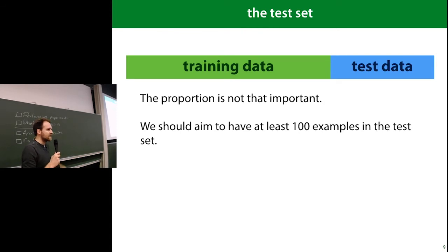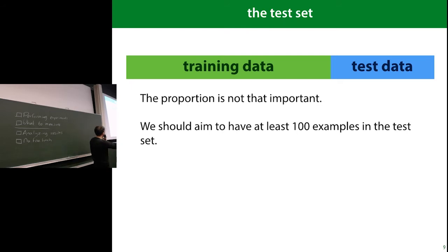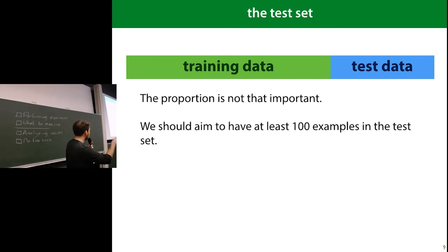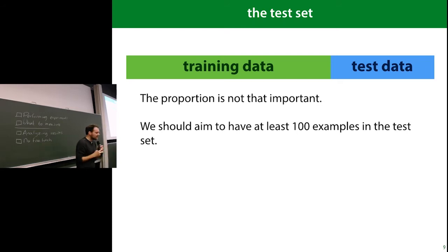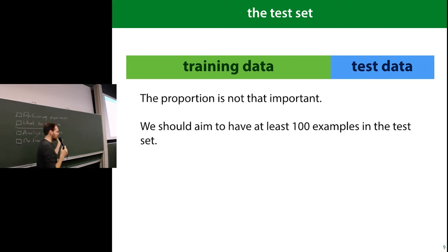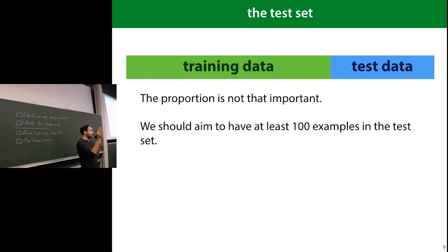Usually we don't actually go out and get new data once we've trained our model. What we actually do is withhold part of our data as test data. The proportion is not super important, but it's very important that you do this. You should have at least 100 examples in the test set — actually 1,000 is better and 10,000 is ideal. We'll see why later on at the end of the lecture.